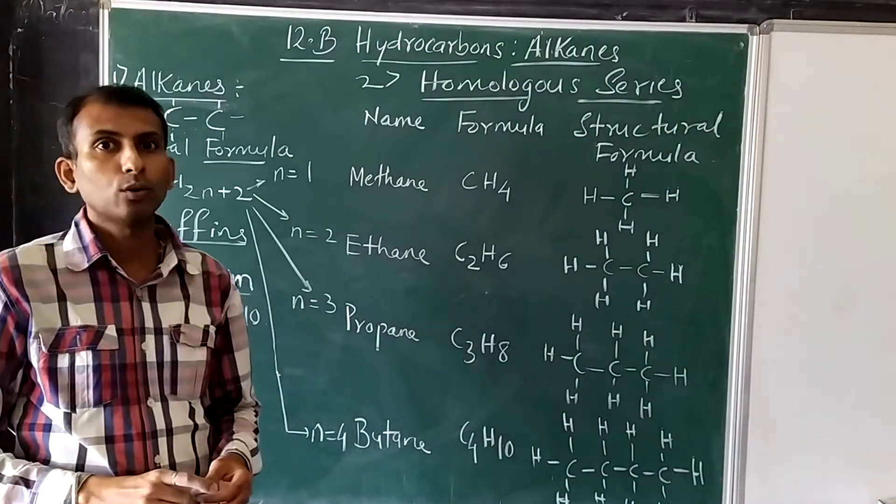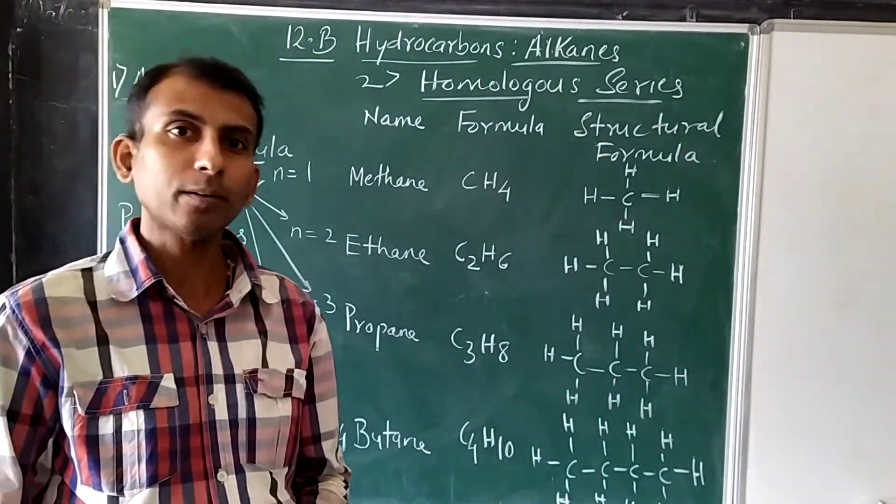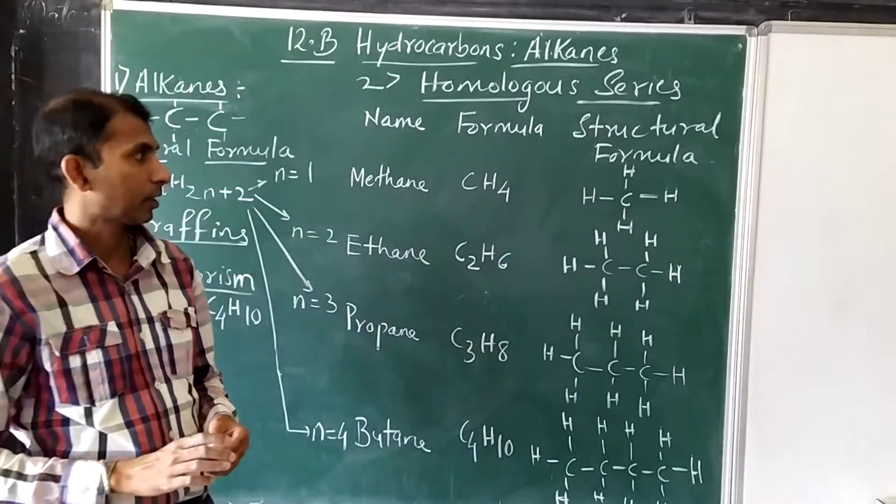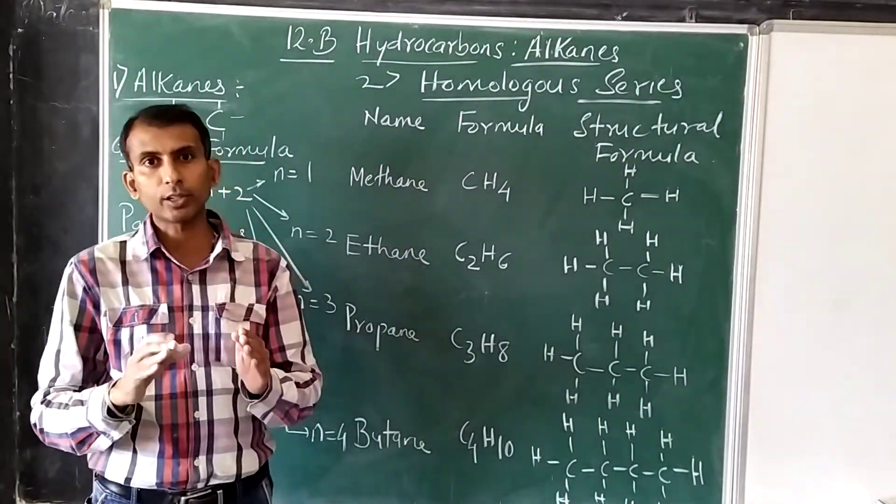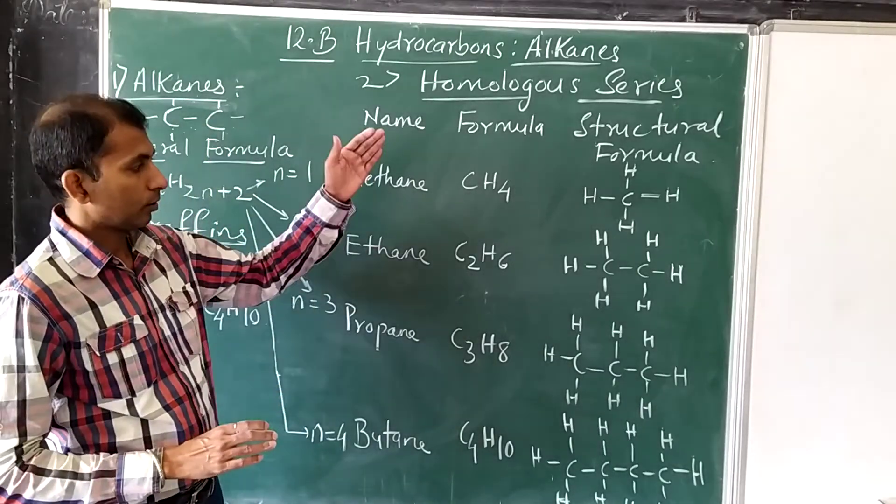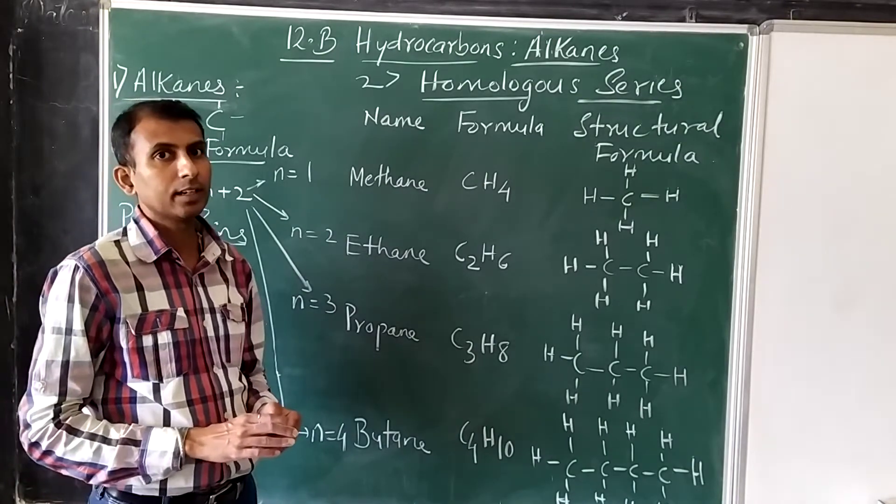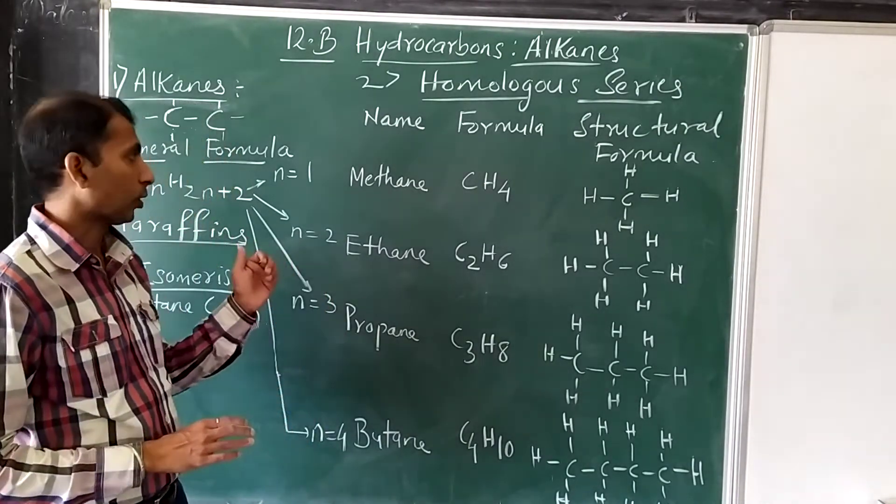Now homologous series we have already introduced in the last chapter. Here we are going to study the homologous series of alkanes which follow the formula CnH2n+2.